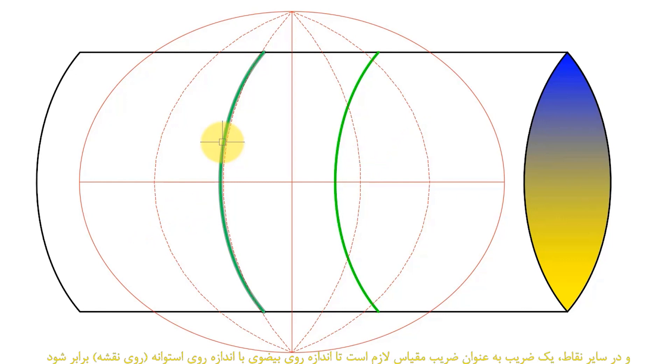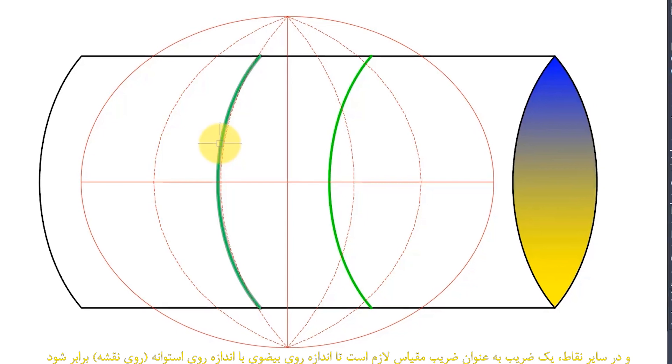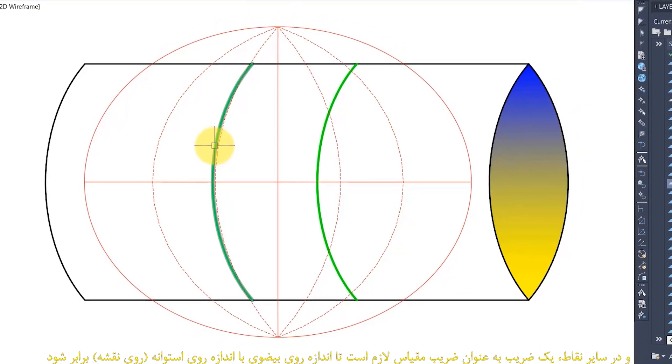And elsewhere, a coefficient as the scale factor is required equal to the size on the cylinder or on the map.